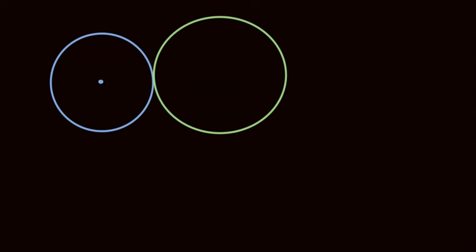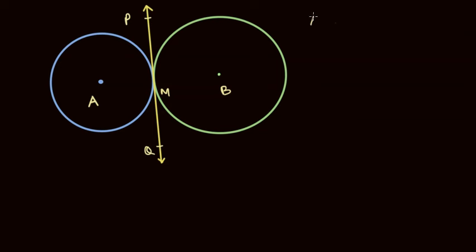Let's say this is the first circle and this is the second circle, and these two circles are tangent to each other. That means there exists a tangent line which is tangent to both circles at the same time. Let us name the centers as point A and point B, the contact point as M, and the tangent line as PQ. What we need to prove is that A, M, and B are collinear.